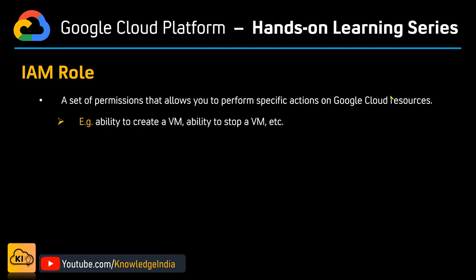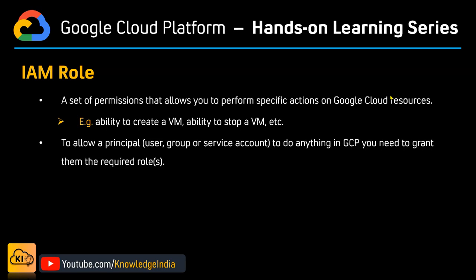Within Google Cloud, if you want to allow a principal to do something, that principal needs to have the necessary permissions. What are the possible principals? It could be a user, it could be a group, or it could be a service account. They won't be able to do something unless they have the relevant permission. And the way you give them permission is via an IAM role — you go ahead and allocate them an IAM role.